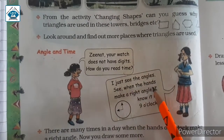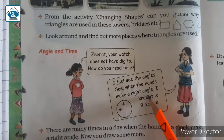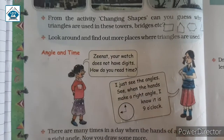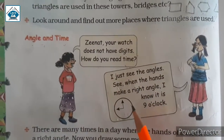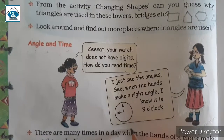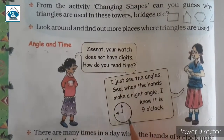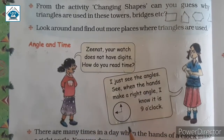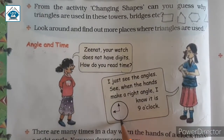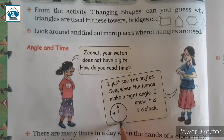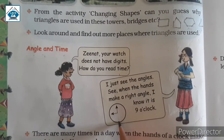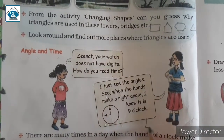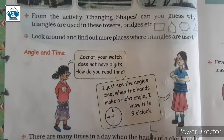See, when the hands make a right angle, I know it is 9 o'clock. Here in this picture you can see the right angle. And Jeenat knows that the time is exactly 9 o'clock. Now, you will tell me what shape this right angle makes. Yes, it makes an L shape. This is a right angle.